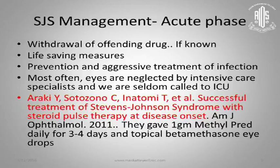Studies have shown successful treatment of Stevens-Johnson with steroid pulse therapy at disease onset — one gram methylprednisolone daily for three to four days. However, convincing the intensivist to allow this is difficult, as they are very worried about fulminant infection. You need to discuss this with the intensivist, but when done, the results were dramatically better.